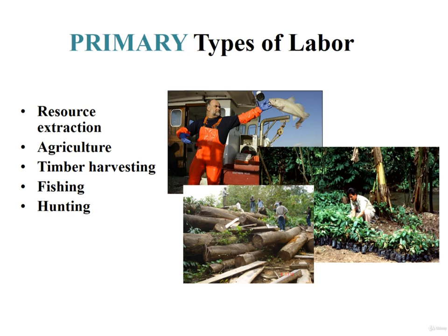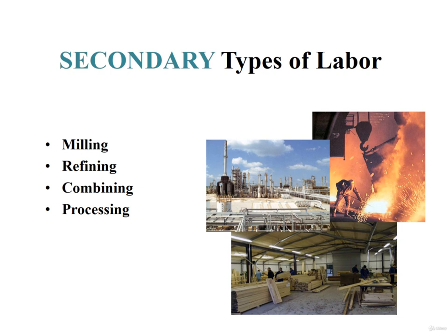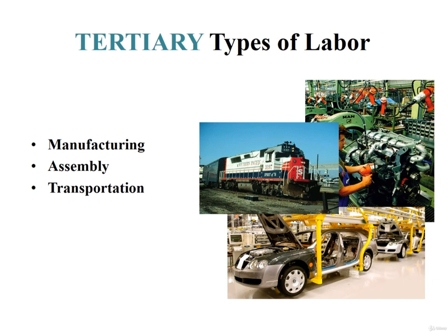To help describe the contributions of particular types of labor, the language of political economy further divides labor into categories based on the closeness to labor's direct application to land and the use of natural resources. These primary types of labor include resource extraction, agriculture, timber harvesting, fishing, and hunting. Once raw materials are produced, a secondary category of labor is engaged in milling, refining, combining, and processing of materials. Materials are then converted into new forms when they are ready for use in manufacturing and assembly of finished goods, which are then transported to their final destinations for sale and consumption.